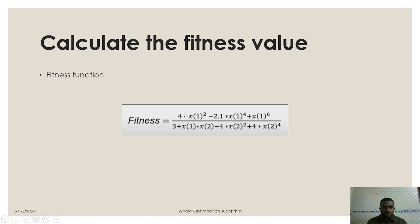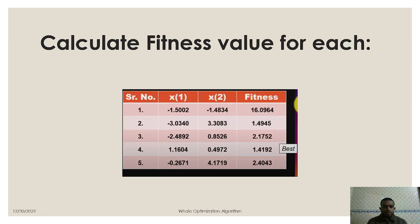Then we calculate the fitness value for each value and we found the fitness here: 16.096, 1.4845, 2.1752, 1.4192, and 2.4043. Here the lowest value is 1.4192, that means this is the nearest value of the position and that is why it is the best fitness value. So we'll choose 1.4192 as the best fitness value.